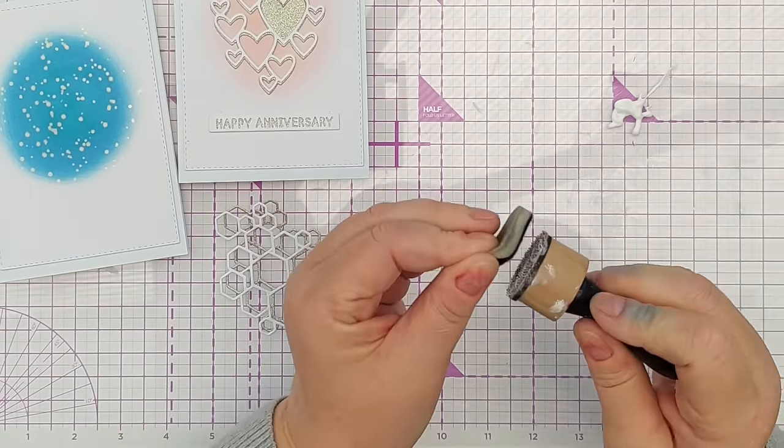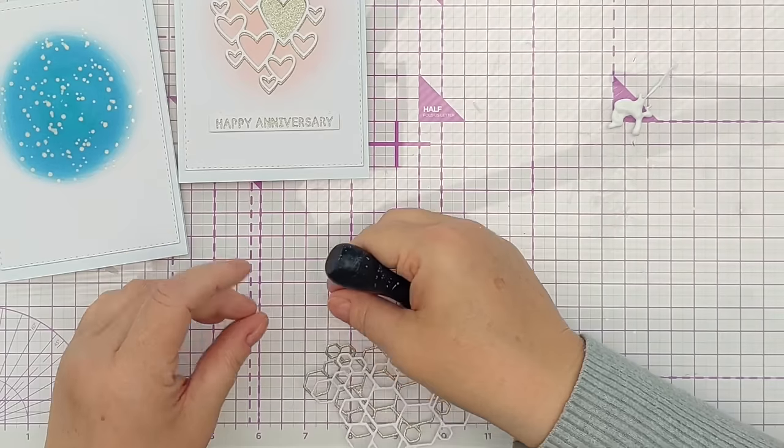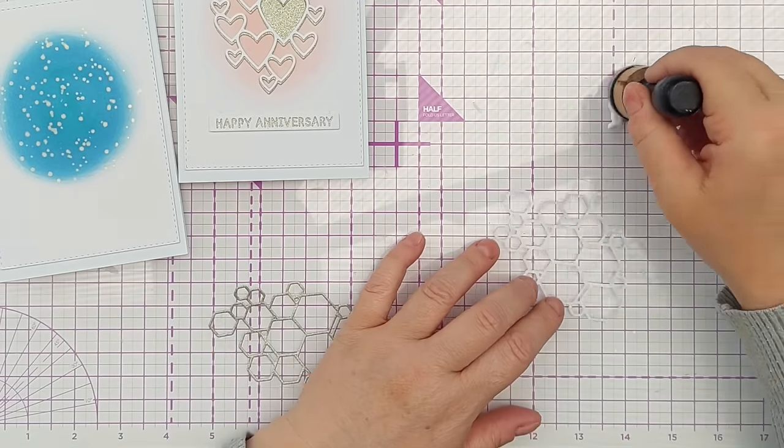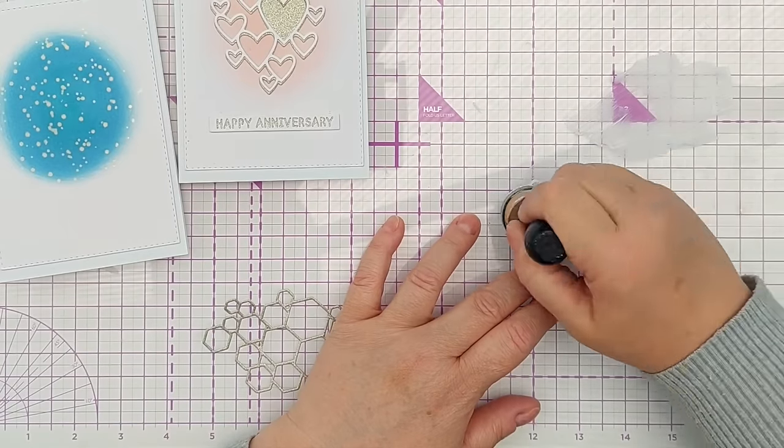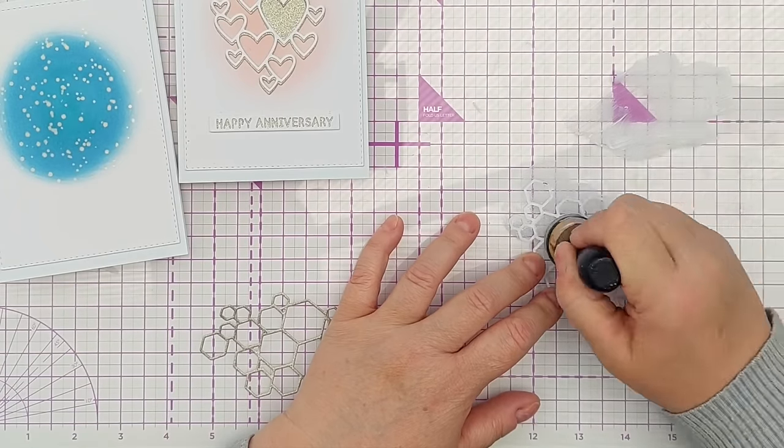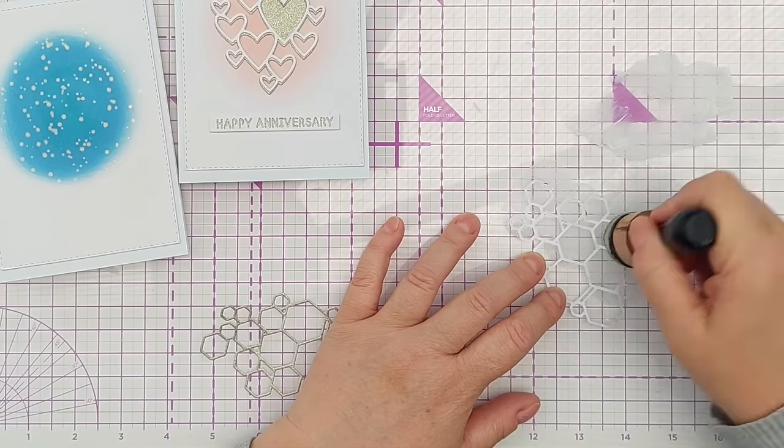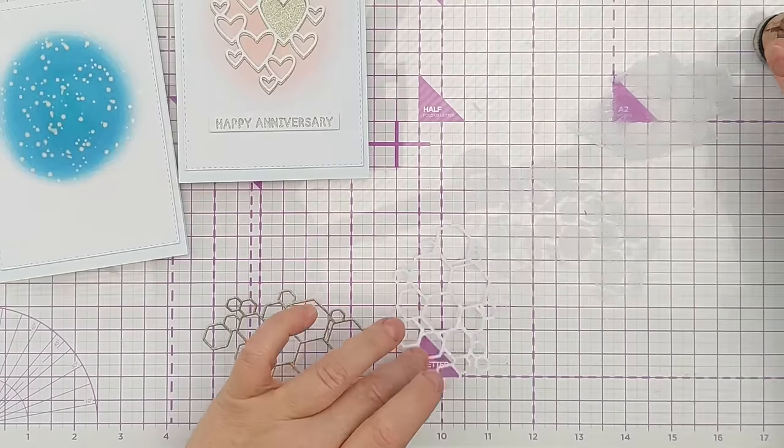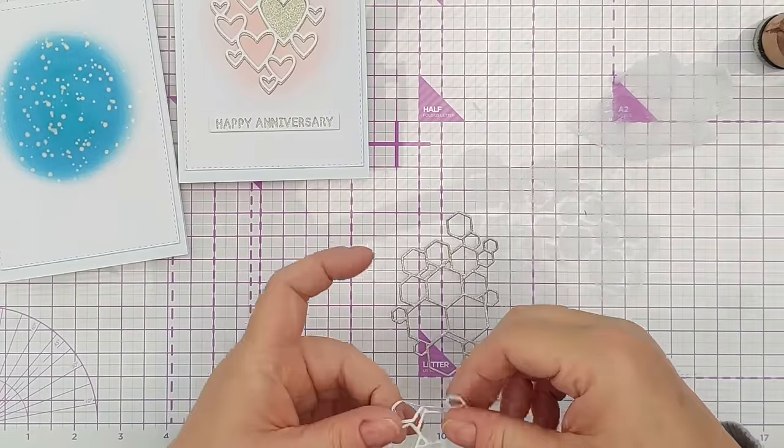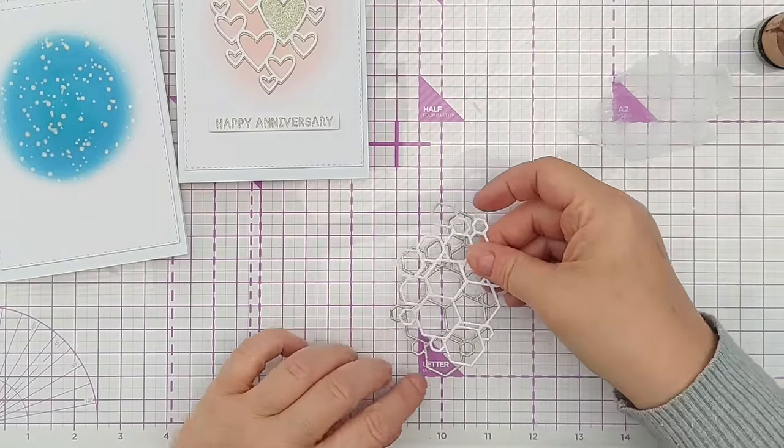And a sponge dauber. This is a great way of adding PVA glue to the back of intricate, delicate die cuts. Just pounce the glue onto it like that. And that's sticky enough to stick onto something like this.